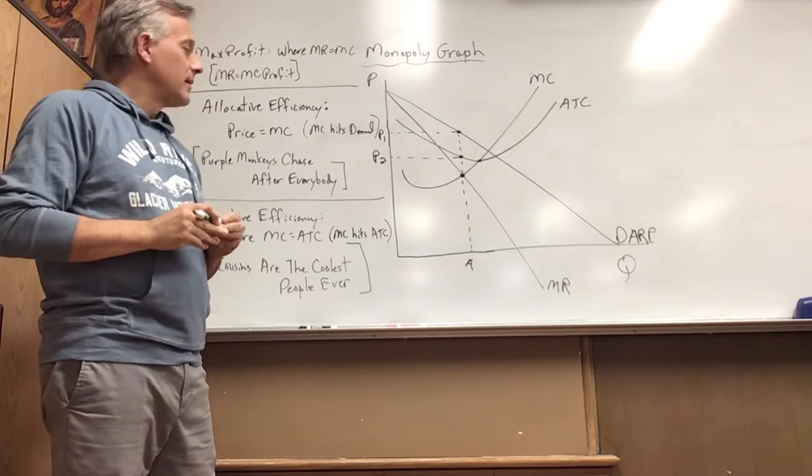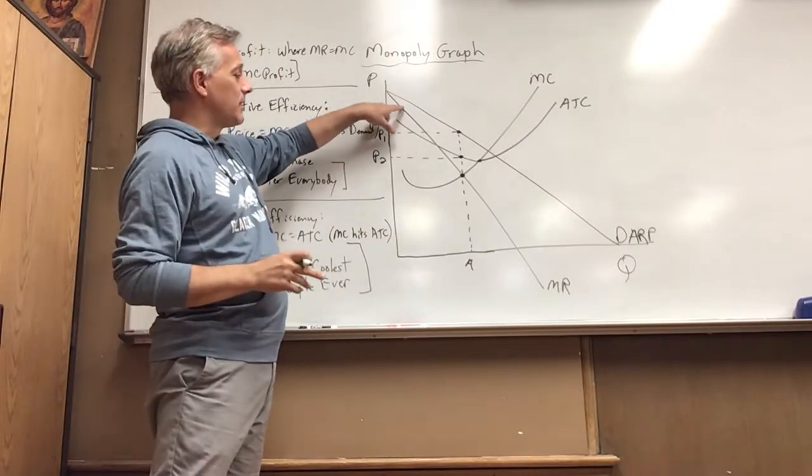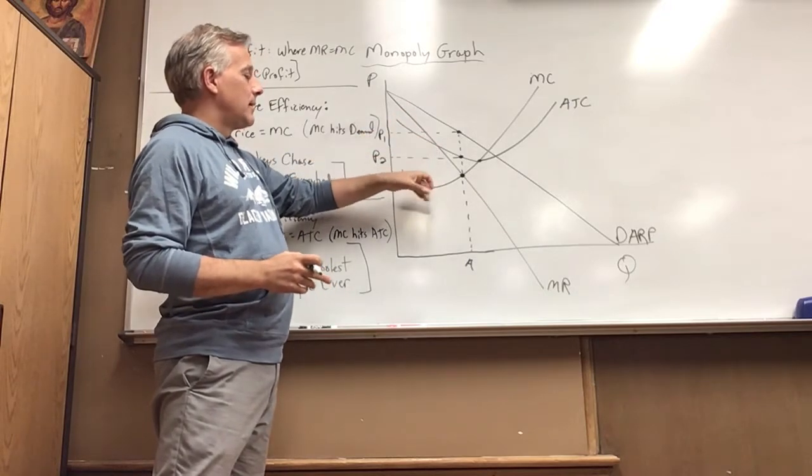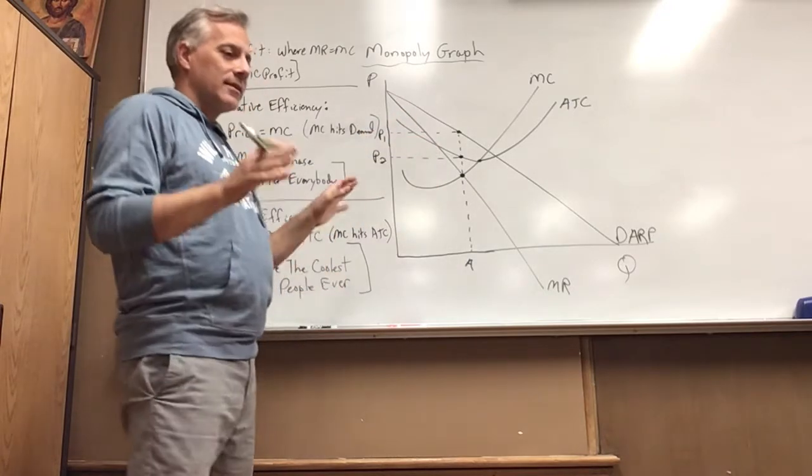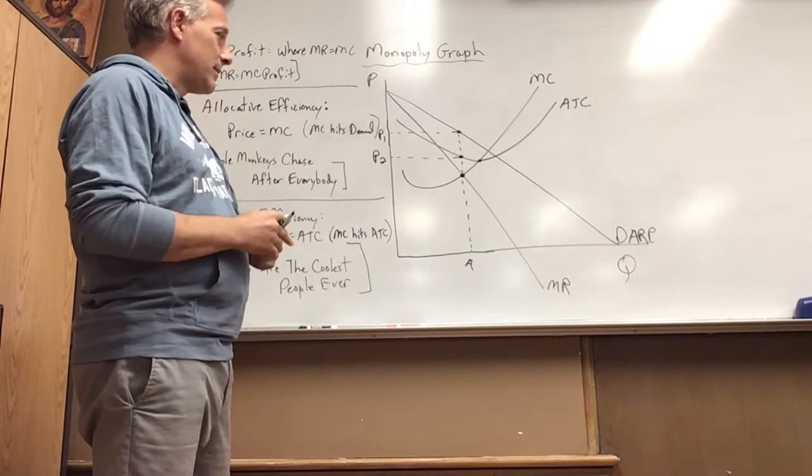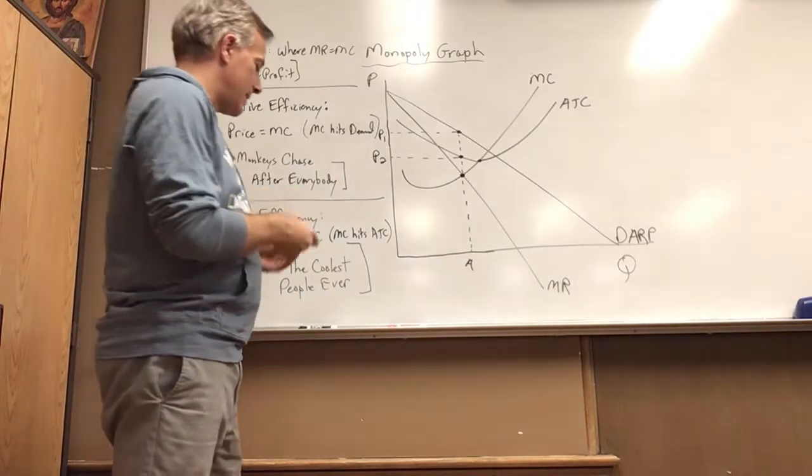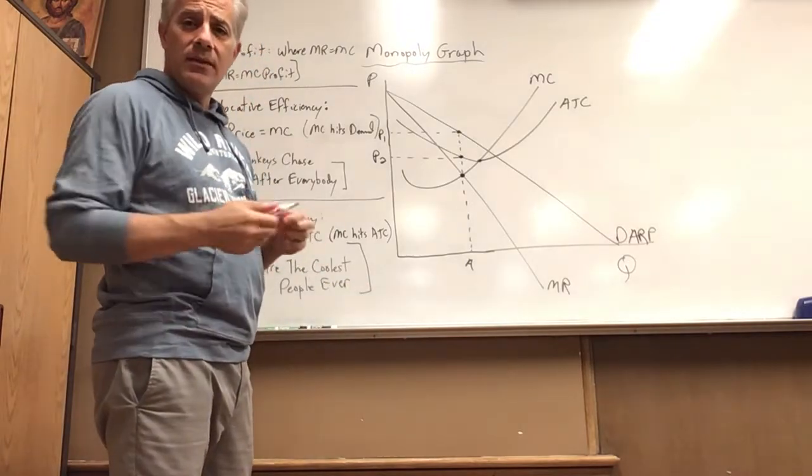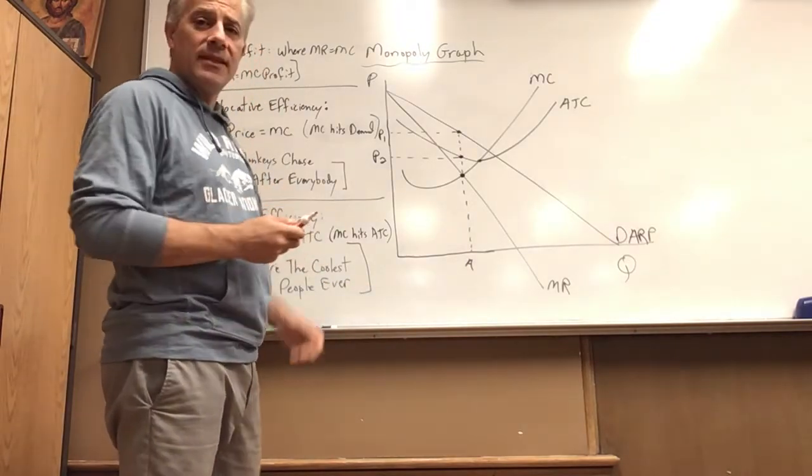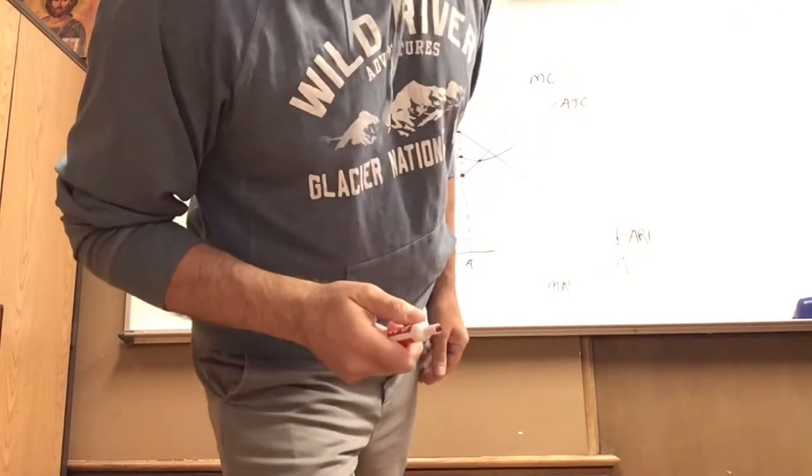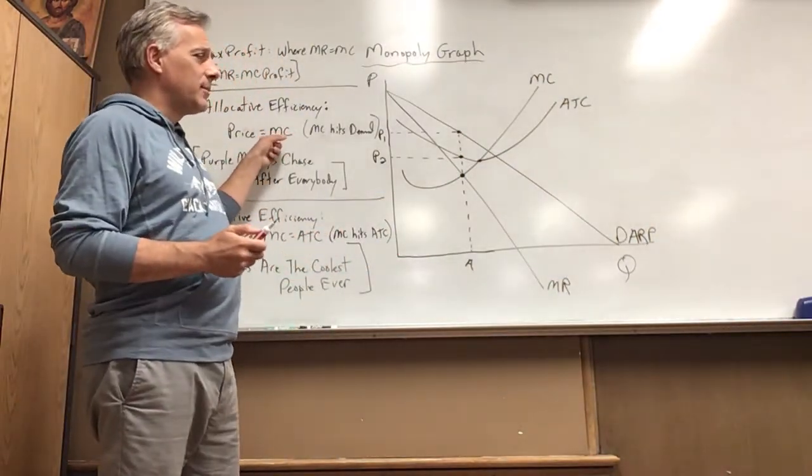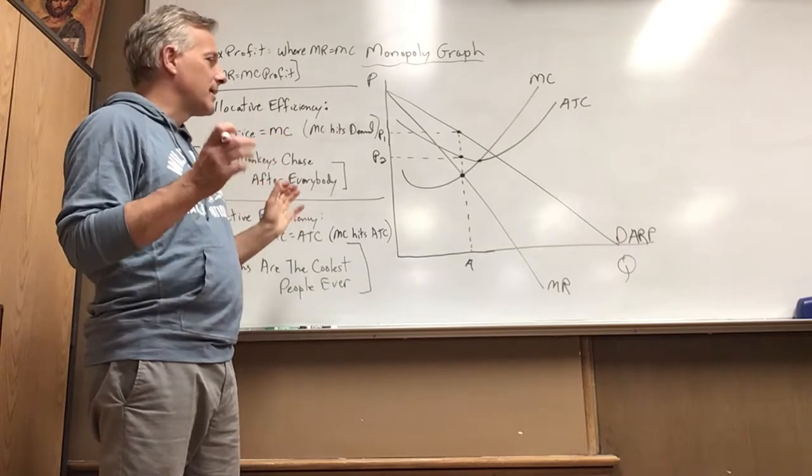At the quantity of max profit, there's the consumer surplus. Producer surplus would be below going down to the marginal cost curve. Don't be terribly concerned about producer surplus in this scenario, but we do want to pay attention to allocative efficiency. Allocative efficiency is where price equals marginal cost, so now we're going to take a look at that.